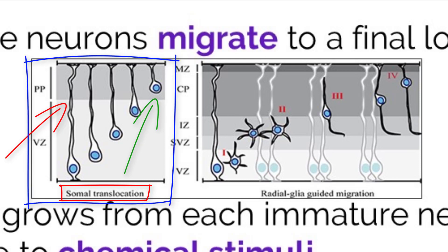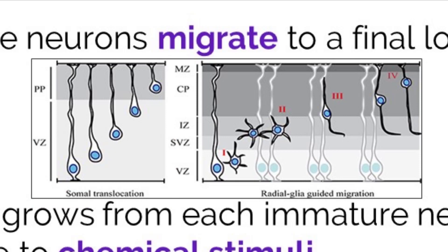In this image, you can see the soma of the neuron translocating along the path of the extension. Additionally, the second type of movement is called glial guidance, which is where immature neurons use glial cells as scaffolds to move to their final destination.